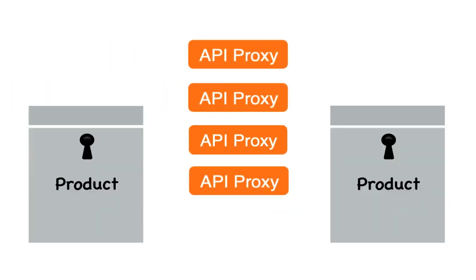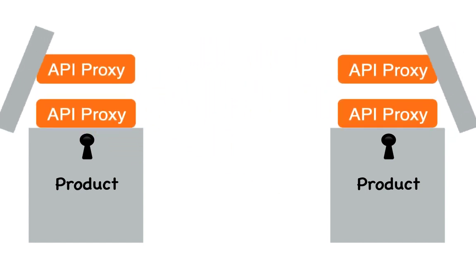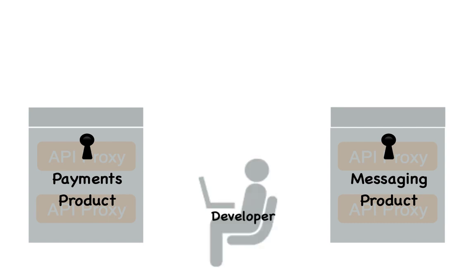Once you have a set of API proxies ready, you'll set up your API products, taking specific proxy resources and grouping them together into products to address specific needs and use cases for your developer community. You'll then register your app developers, which enables them to view your API offerings. Once registered, your app developers then register their apps with you so they can associate their apps with the API products that their apps will need to access.